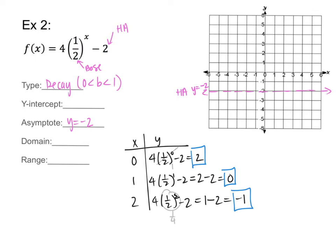So my points are (0, 2) — which is also the y-intercept — (1, 0), and (2, −1). I'll connect the dots to create the curve. As I connect them the curve slopes down, and as it keeps going down it will hit the horizontal asymptote, so I have to flatten out. On the other side the curve moves up.